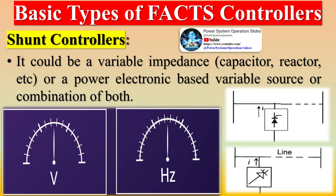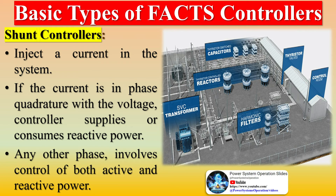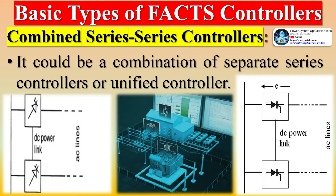Series controllers could be a variable impedance capacitor, reactor, etc., or a power electronic-based variable source of main frequency, subsynchronous and harmonic frequencies to serve the desired need. They inject a voltage in series with the line. If the voltage is in phase quadrature with the current, the controller supplies or consumes reactive power. Any other phase relationship involves control of both active and reactive power.